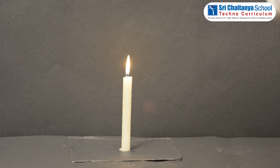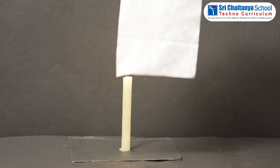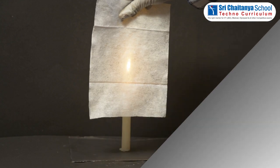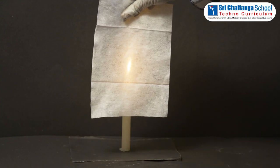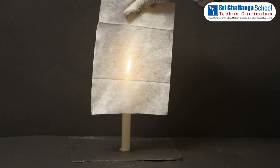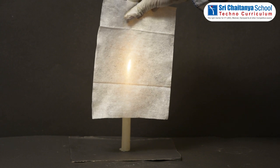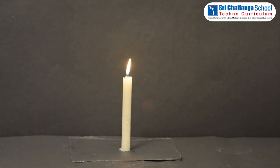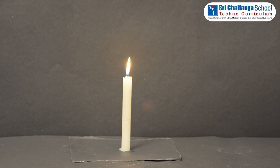Now, observe by using a tissue paper. Can you see the lighted candle now? Yes, we can see, but it is not clearly. What we can say here? The tissue paper is a translucent substance.